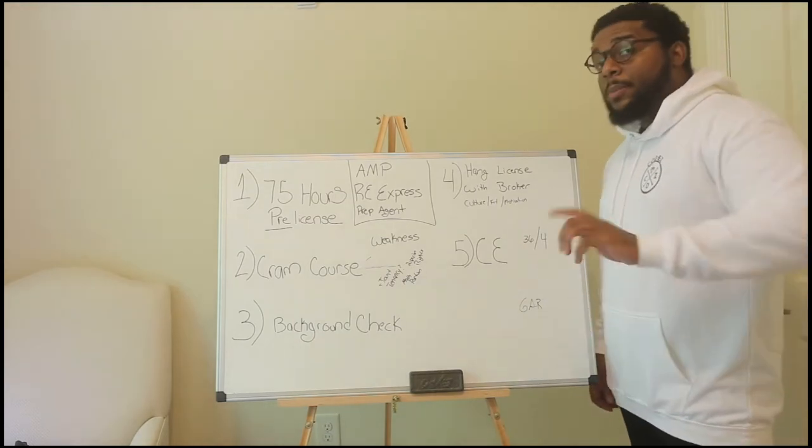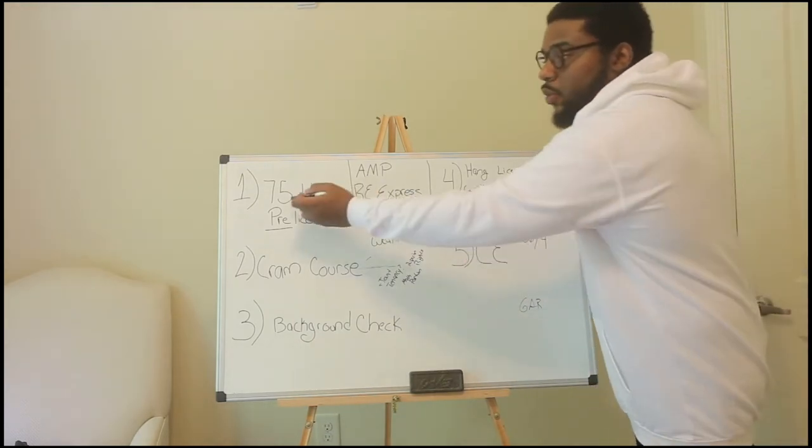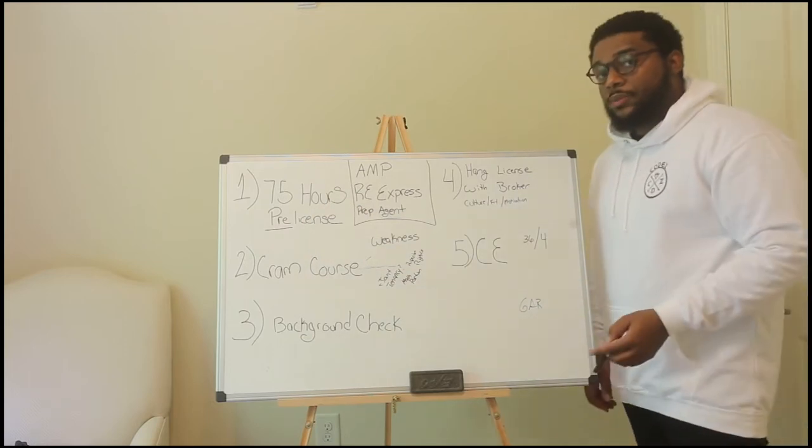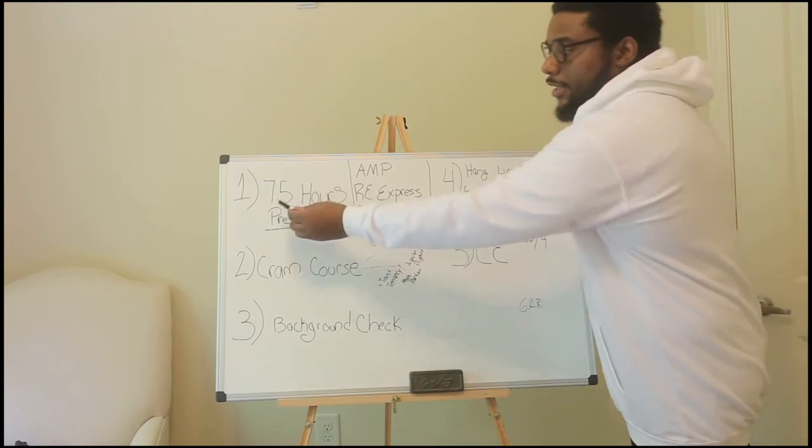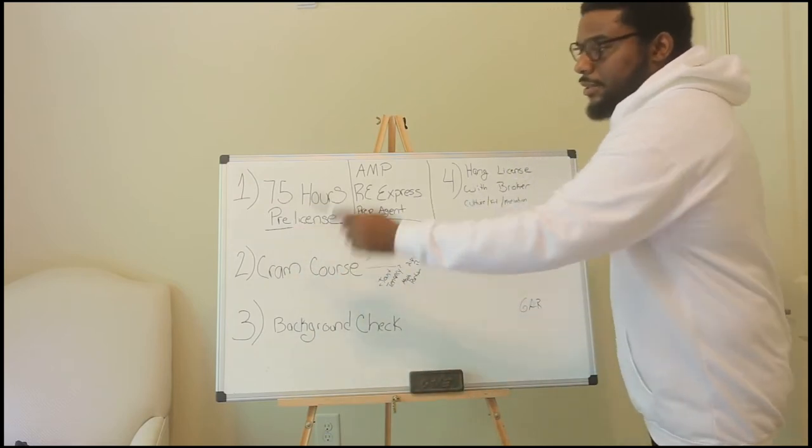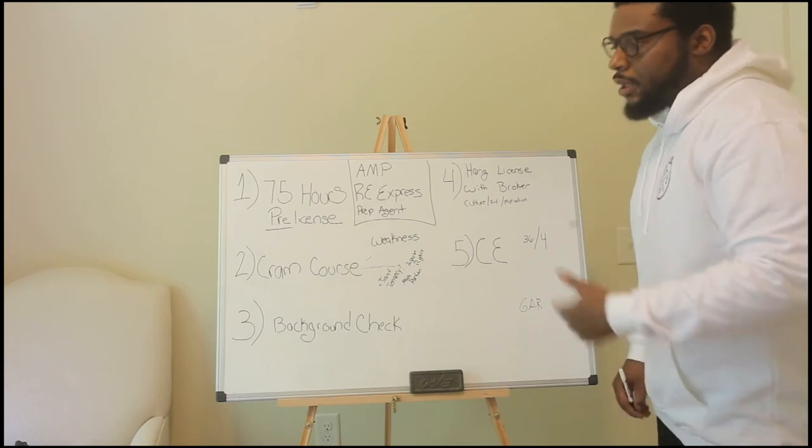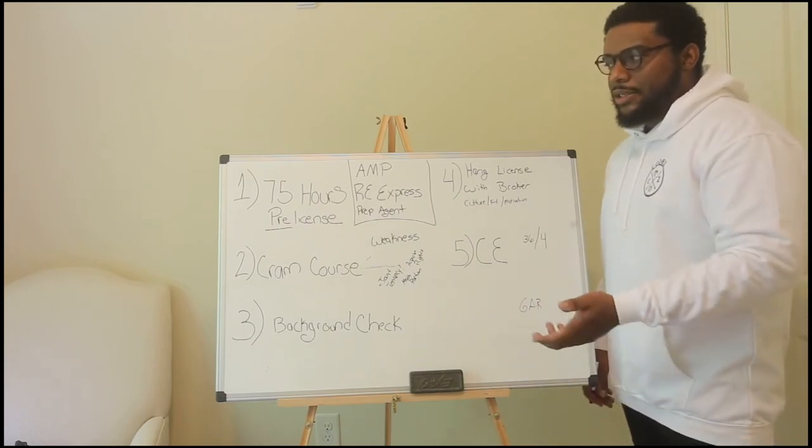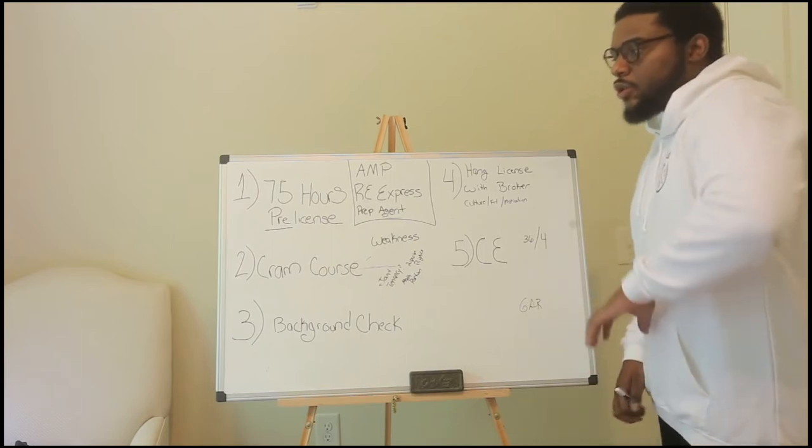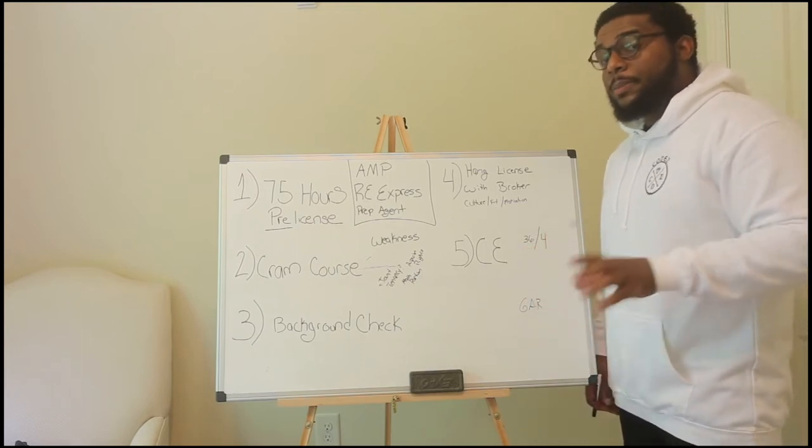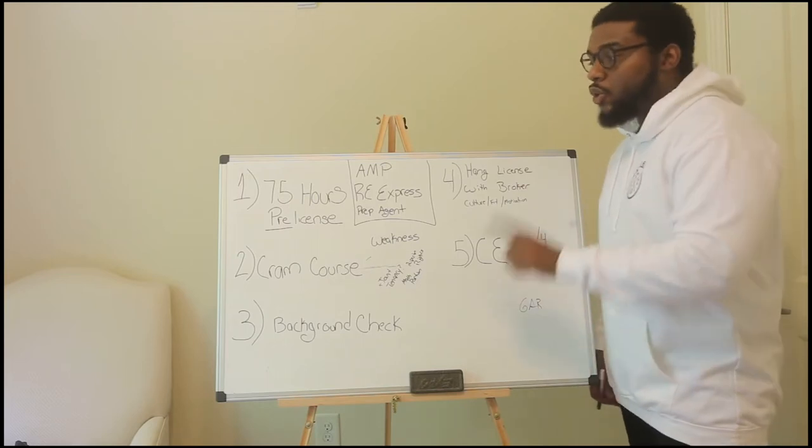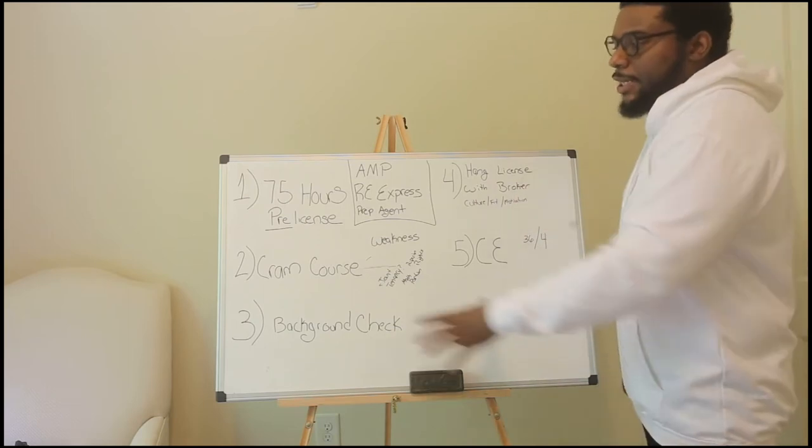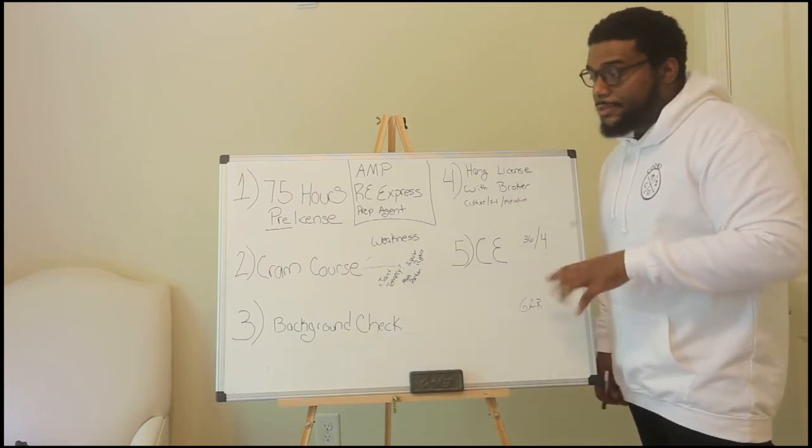Once you made the decision that you want to become a licensed salesperson, there are some things that you got to do. I have a general outline of the things that you need to be prepared for, get your mind right, and this is the sequence of the best way to attack this. The first thing you're going to have to do, depending on your state, because the hours may vary. For example, in the state of Georgia, you're going to need to take 75 hours of a pre-licensed salesperson course.